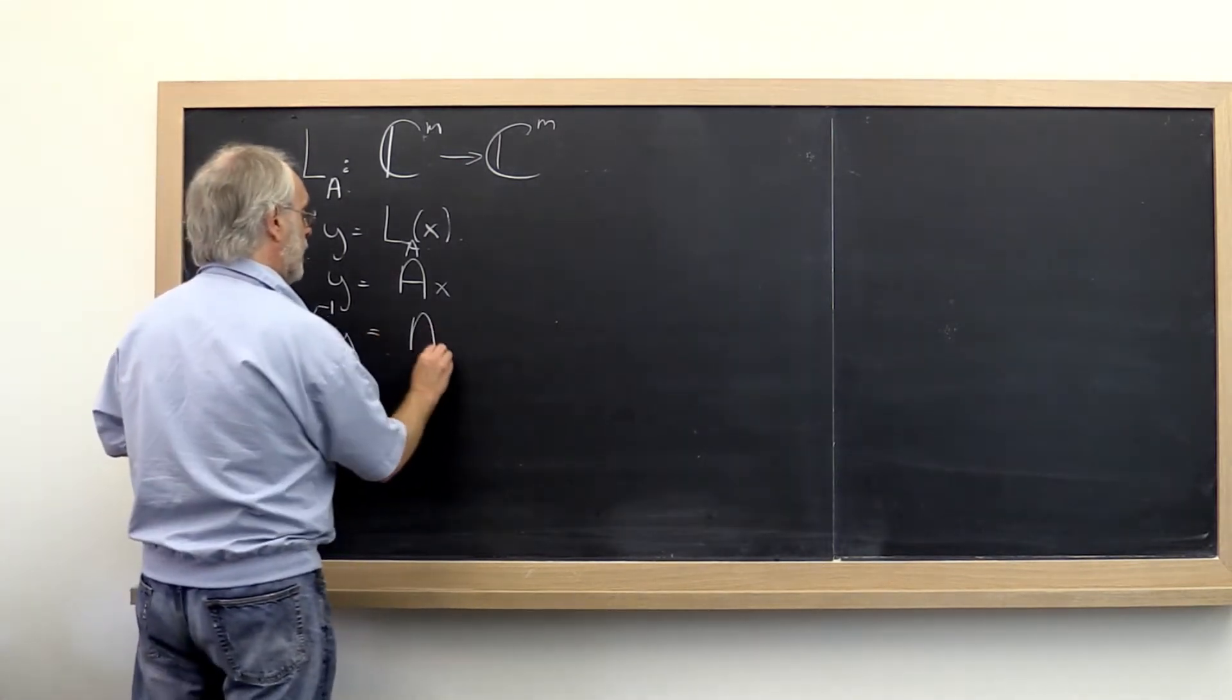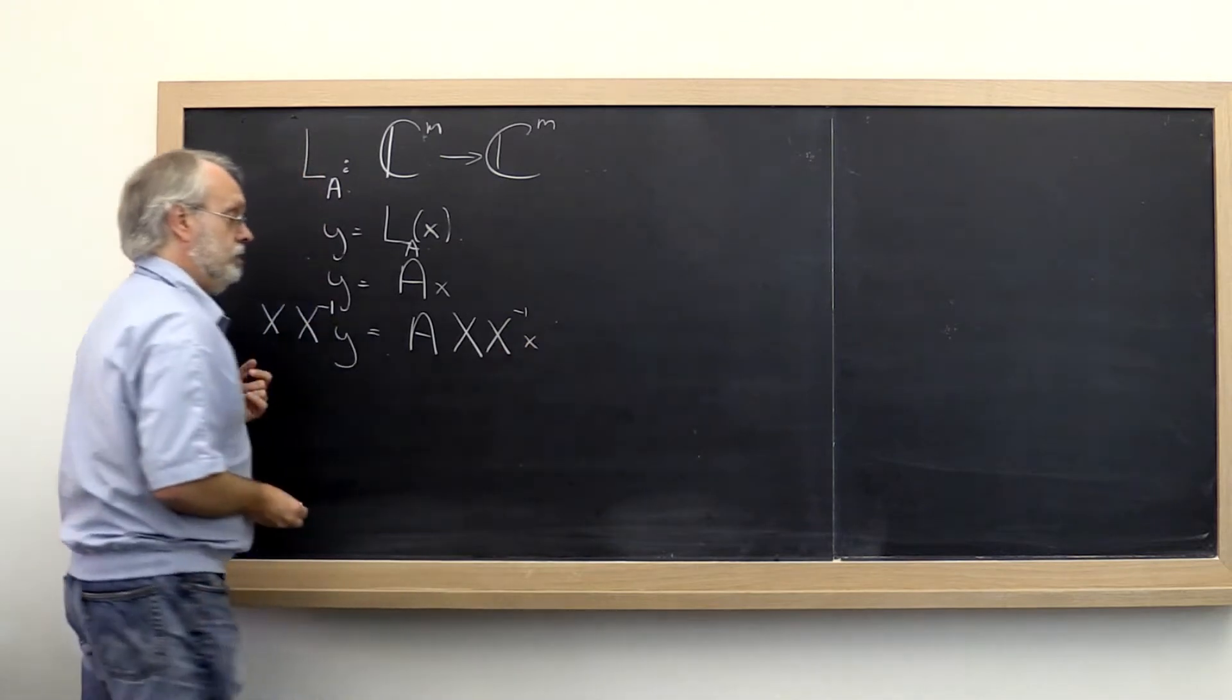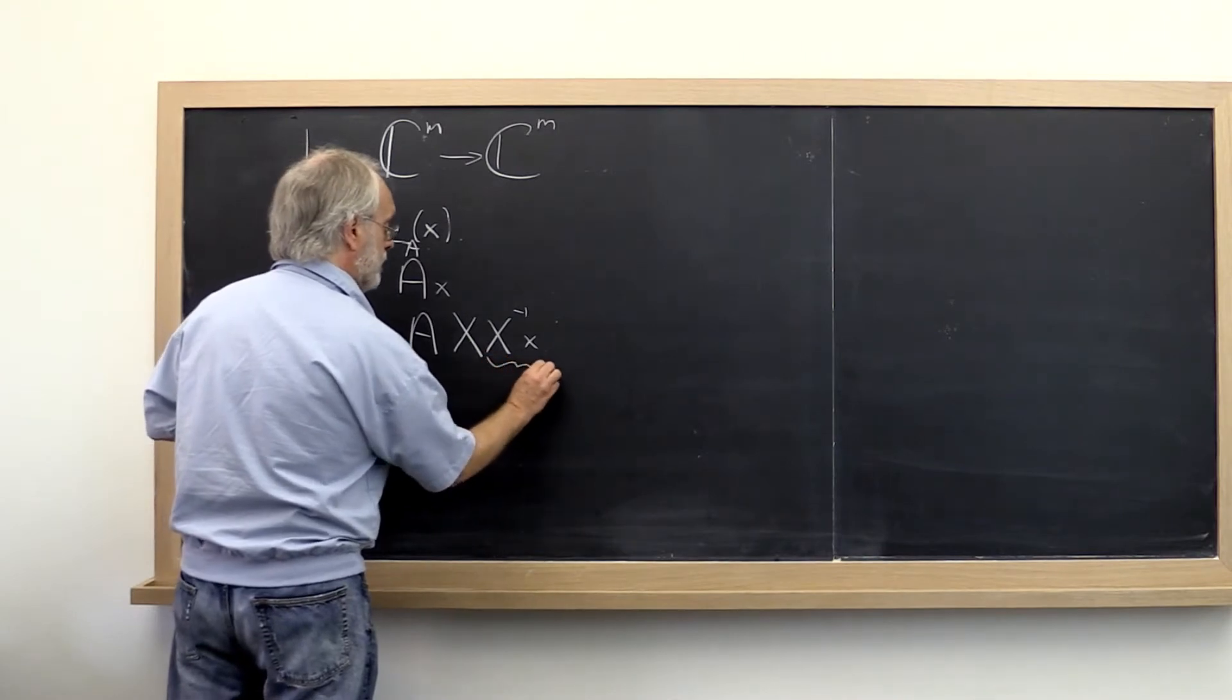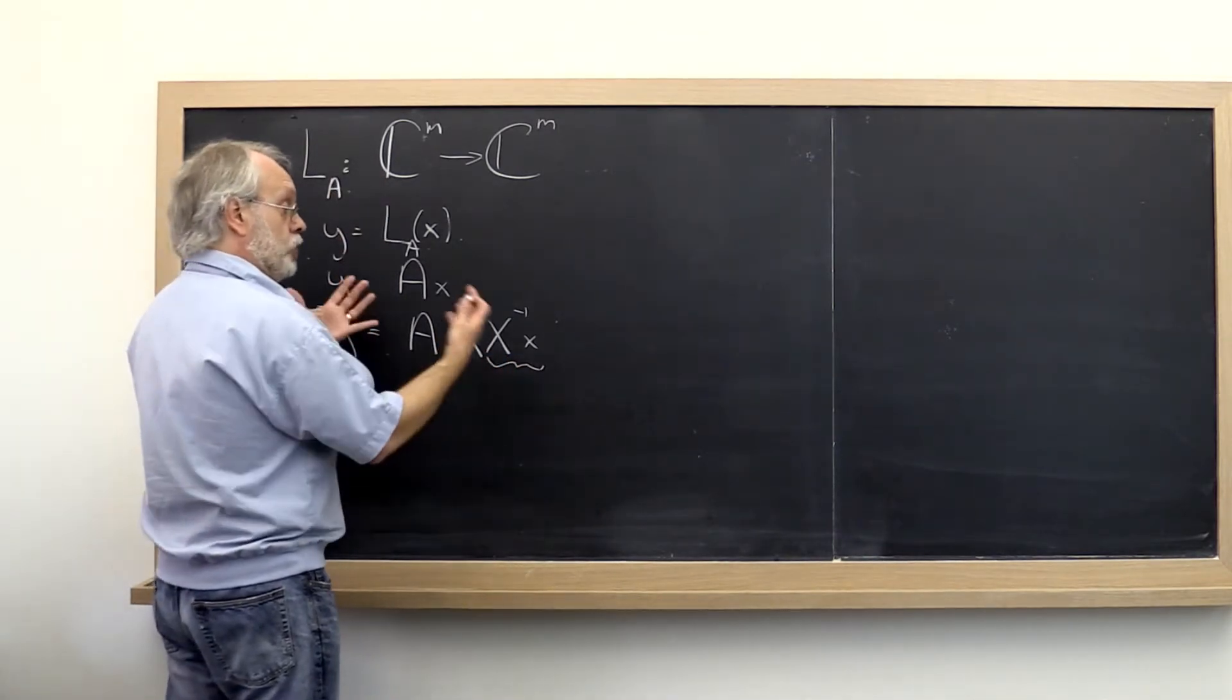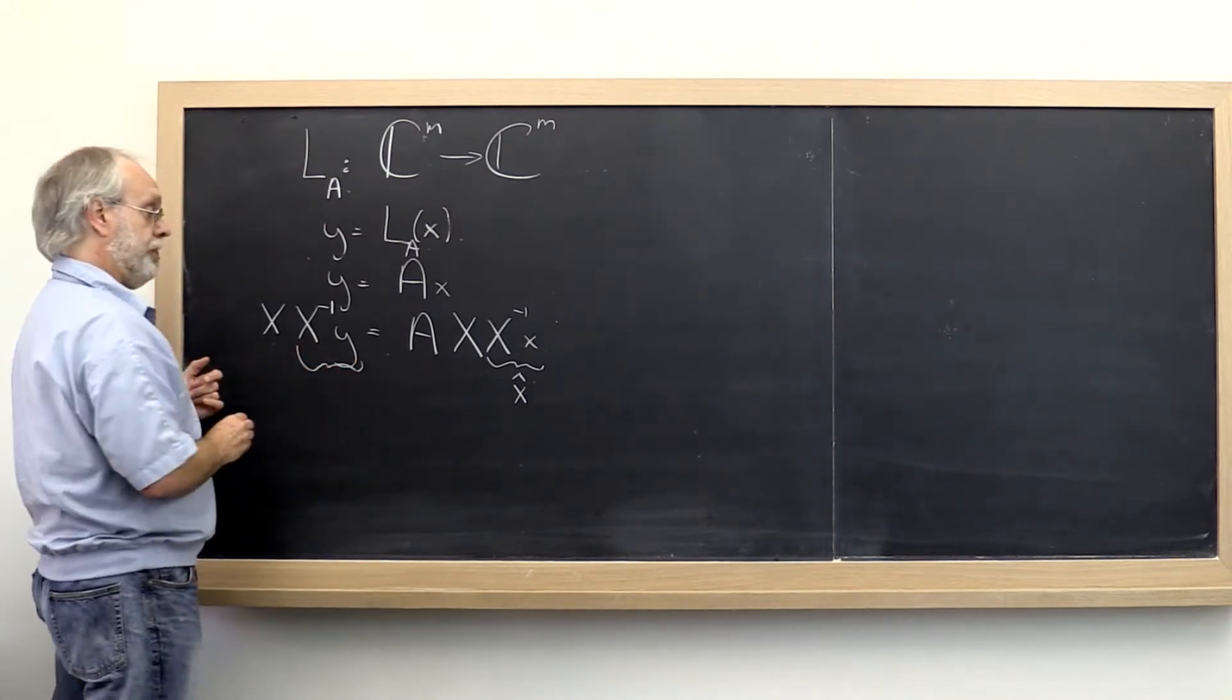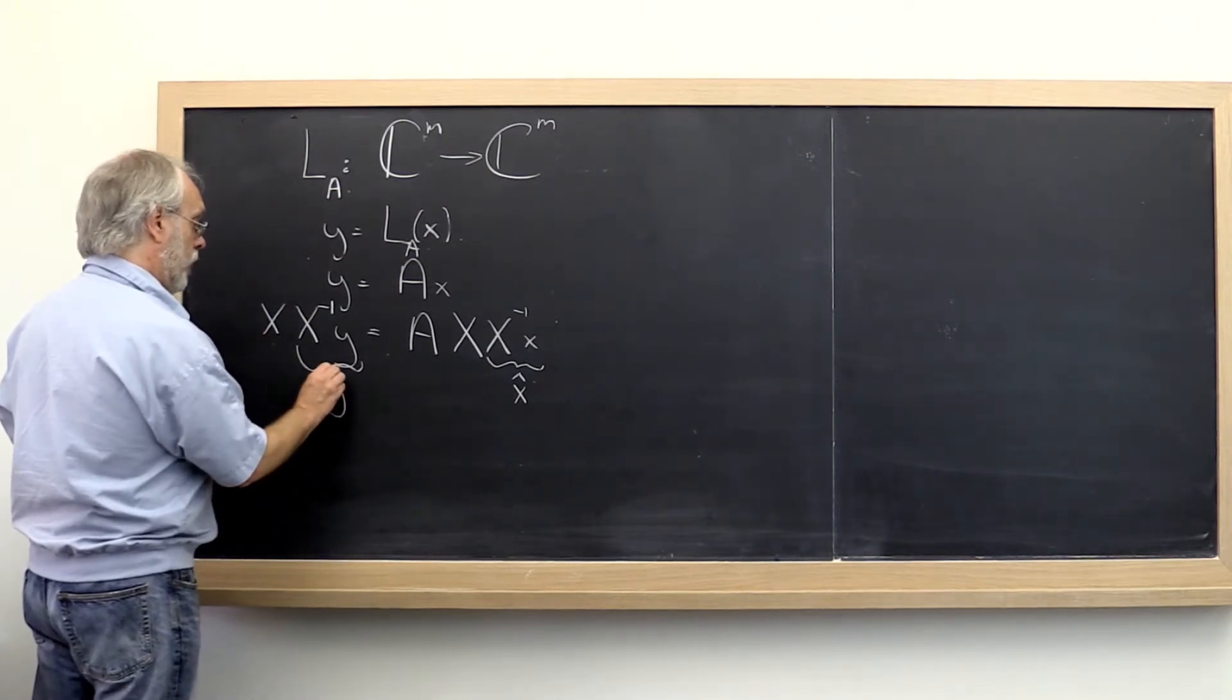And then similarly we can take our vector X and view it in the same basis. And we get this right here. And what that means is that this right here is our new view of X in our new basis. We'll call it X hat. And this here is our new view of our vector Y in our basis that are the columns of the matrix X. And we'll call it Y hat.